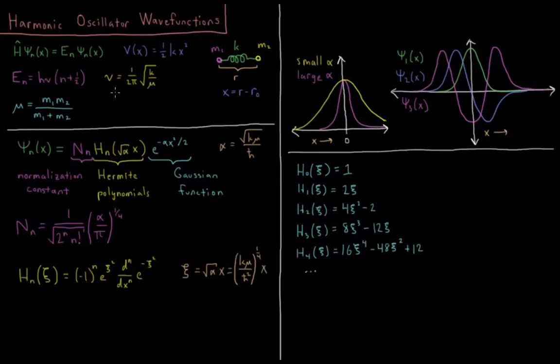The nu is the frequency of that oscillation, which is 1 over 2 pi, square root of k, the spring constant, divided by mu, the reduced mass of our system, which is the reduced mass mu equals m1 times m2 over m1 plus m2.